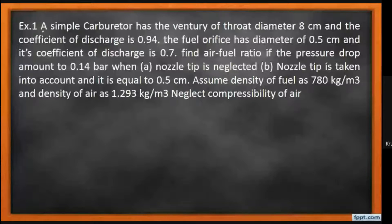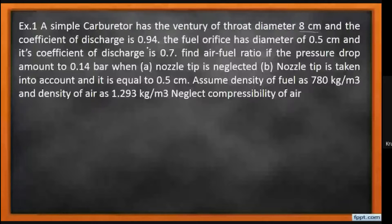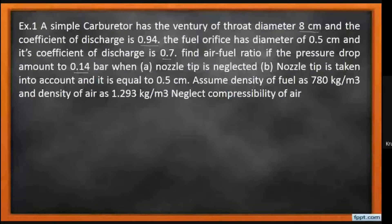Numerical number one: a simple carburetor has a venturi throat diameter of 8 centimeters and the coefficient of discharge is 0.94. The fuel orifice has a diameter of 0.5 centimeters and its coefficient of discharge is 0.7. Find the air-fuel ratio if the pressure drop is 0.14 bar for two cases: first, nozzle tip is neglected; second, nozzle tip is taken into account and equals 0.5 centimeters.